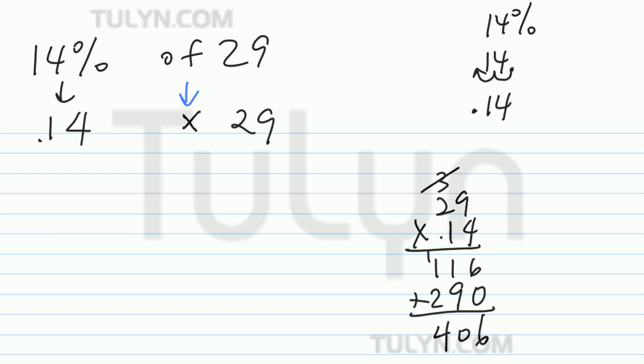Go ahead and count the number of places in your multiplicand. It's 2. 406 is a whole number, that means there's a decimal in the back. Move that over two places to reflect your multiplicand. That's 4.06. That's your final answer. That's your product.